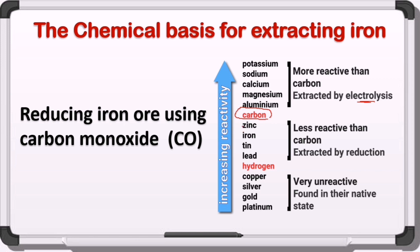But for metals below carbon, they are less reactive than carbon. And because iron is our subject today, it means carbon can replace iron in its ore, or carbon can be used to extract iron from its ore. Carbon will be used as a reducing agent, or instead we're going to use carbon monoxide, because it's much stronger than carbon as a reducing agent.